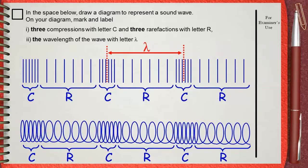Also, you can measure it using rarefactions. This is the center of one rarefaction, and this is the center of the next rarefaction. And this is the wavelength, and it's the same.